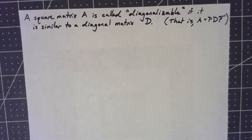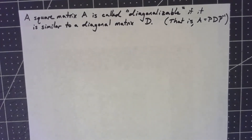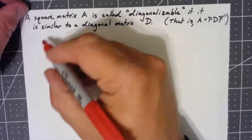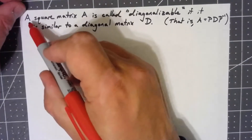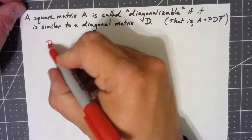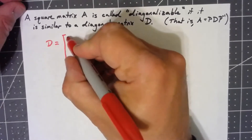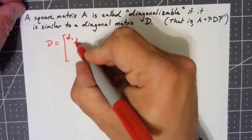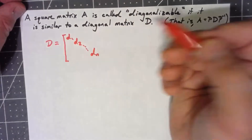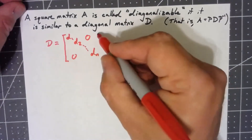We'll talk about why this is important in other videos, but for right now I just want to explore what this diagonal means. So let's say we've got a matrix A that's similar to a matrix D, where D has entries D1, D2, down to Dn along the diagonal and zeros everywhere else.